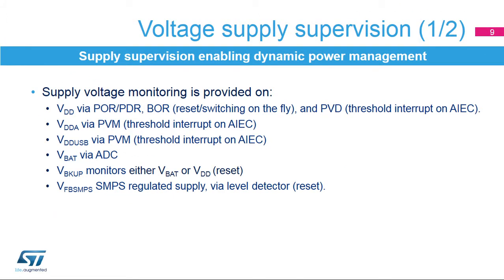The power supply supervisor allows dynamic power supply management. STM32WB devices embed power monitoring on main VDD, analog VDDA, VBAT supply input, switch mode power supply VFBS-MPS, and USB interface VDD-USB supply lines. The main VDD supervision allows reset management and voltage detection via the power voltage detector, or PVD, when VDD crosses the selected threshold. The PVD can be enabled in all modes except standby modes, with seven thresholds selectable by software. The brownout level can be used to provide switching on the fly of the SMPS when VDD drops below the threshold level.